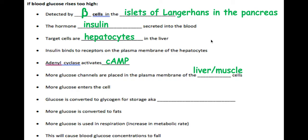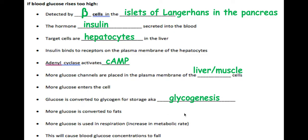In the liver, glucose is converted to glycogen for storage — a process known as glycogenesis. Glucose can also be converted into fats, and in muscle cells more glucose is used in aerobic respiration, increasing the metabolic activity of the organism. All of these processes cause blood glucose concentration to fall back within those narrow limits.